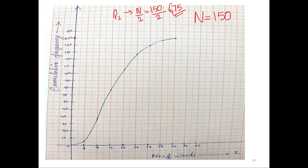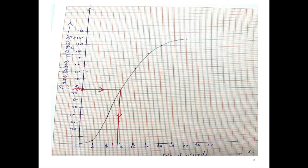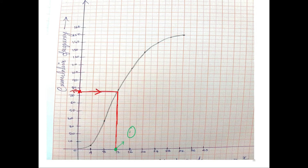Please don't write 75 as the median — it is not the median. What you do is come to the cumulative frequency curve, mark the point 75 on the y-axis, then draw a straight line using a ruler to hit the S-shaped curve, and from that point drop a straight line down to the x-axis. So my Q2, my median, is estimated to be 12.